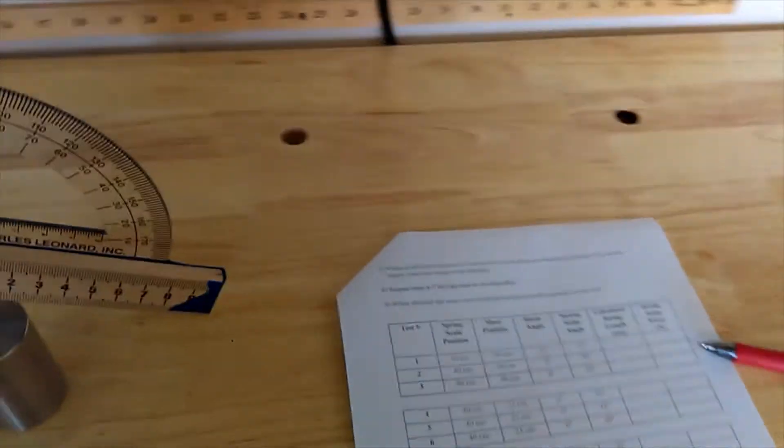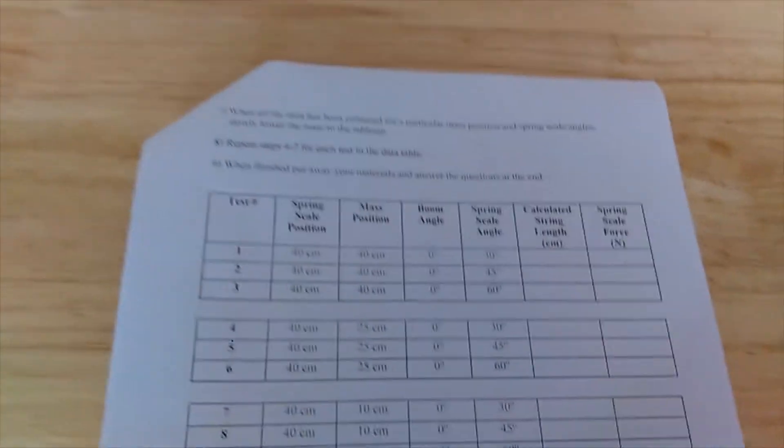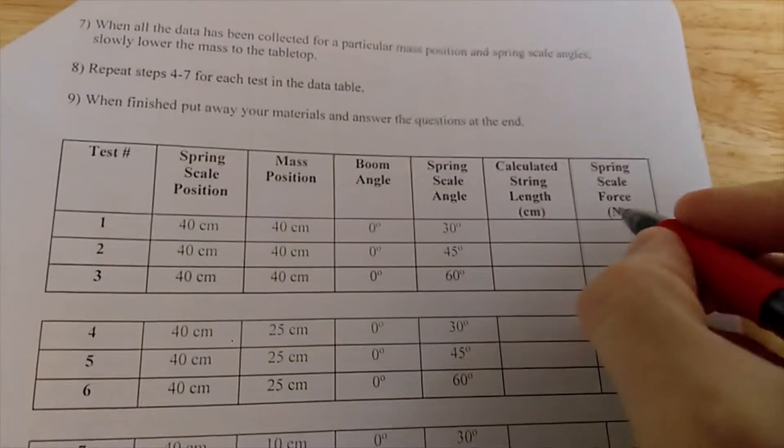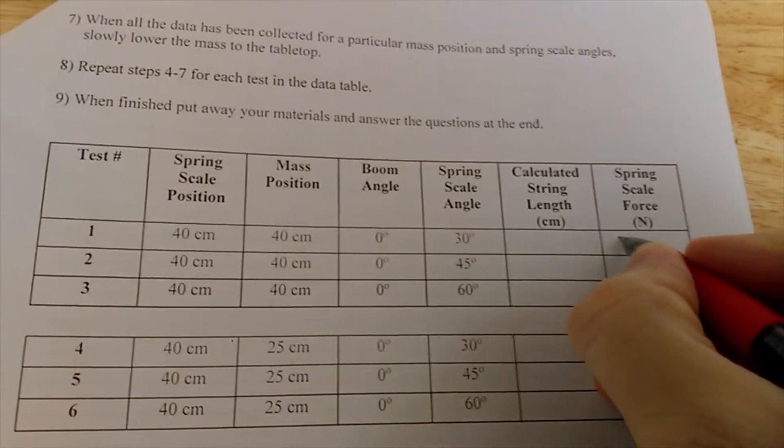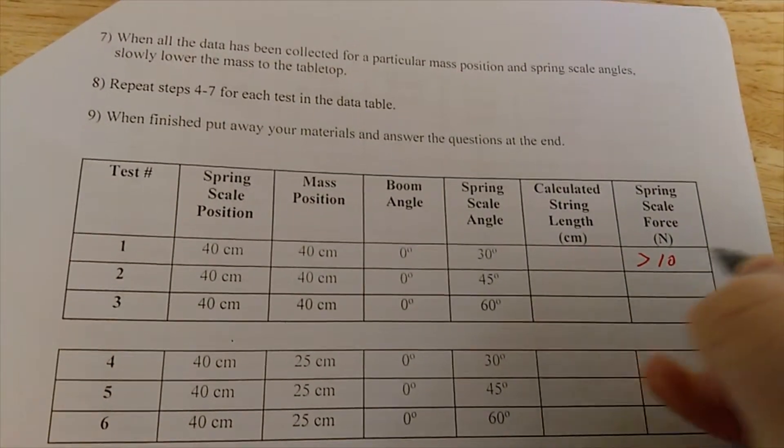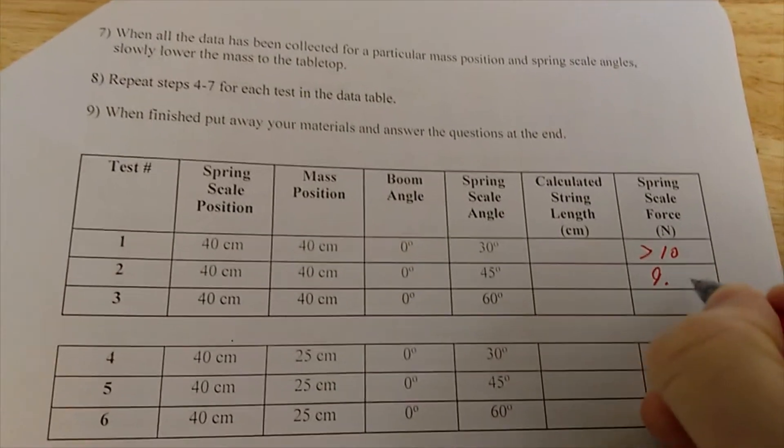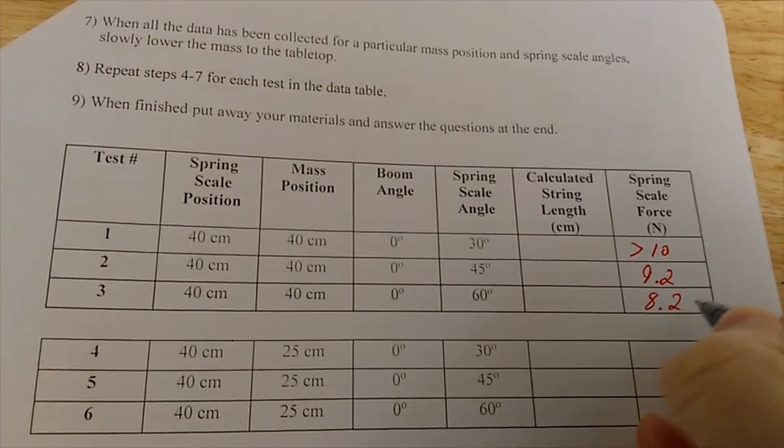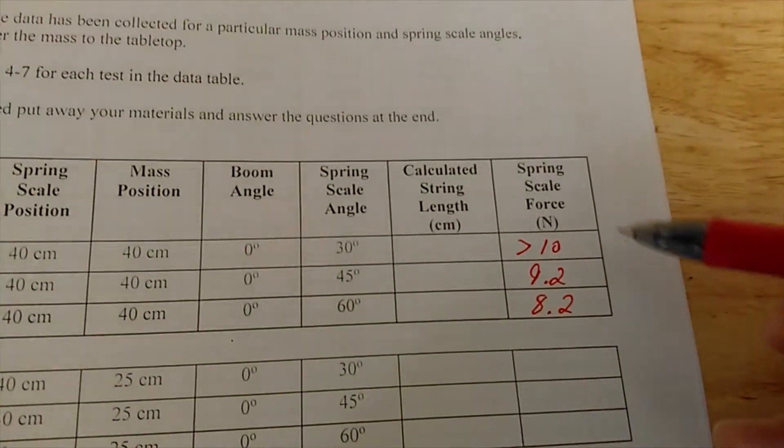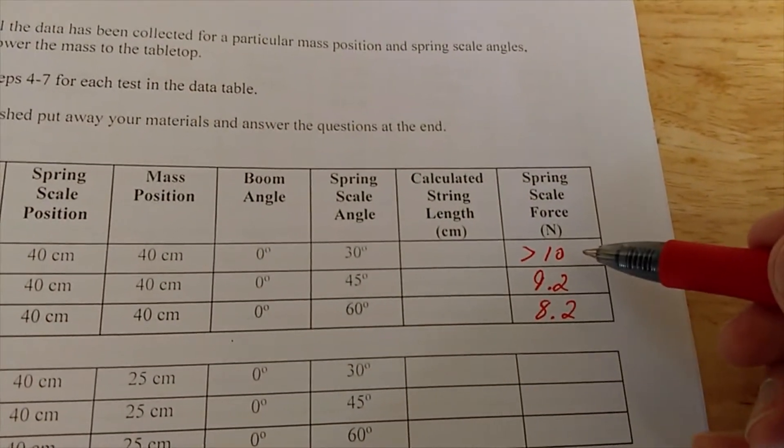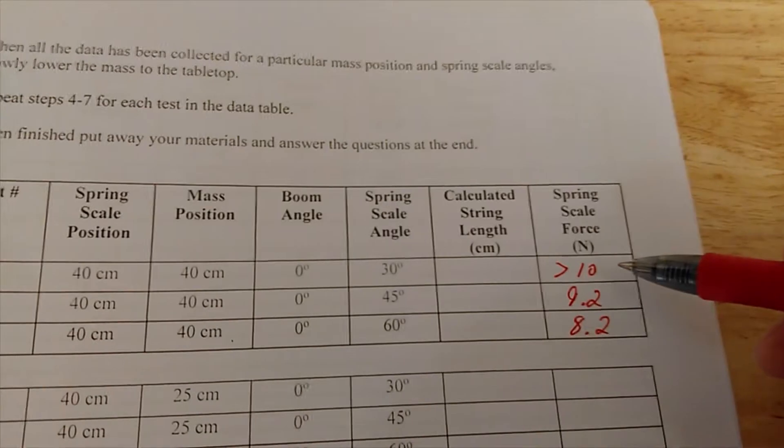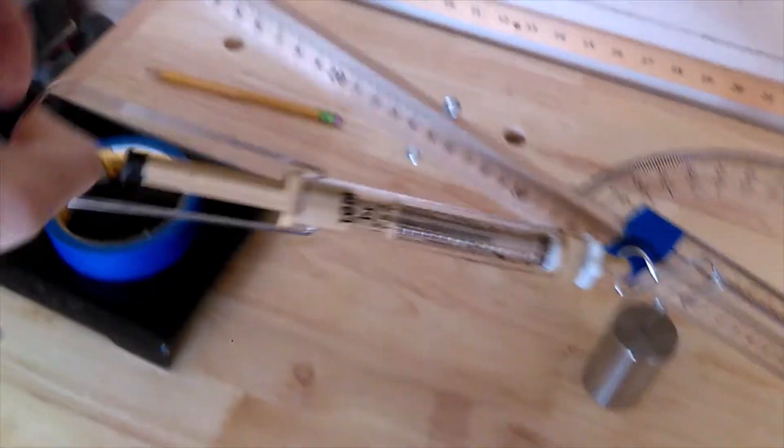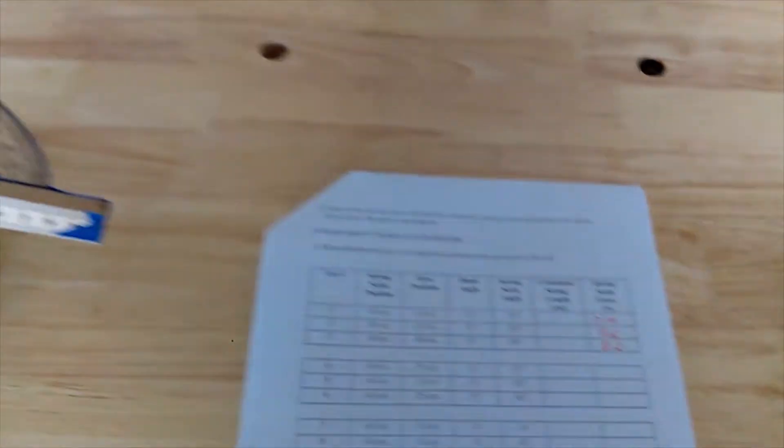So just in recording these, most of them I'm just going to call them out. Let you record them but just on this first one, just so you know what I meant here: greater than 10 newtons, 9.2 newtons, 8.2 newtons for those first three. You're going to have several of them like this that are just greater than 10. And that's fine. That all goes back to the objectives. Our spring scale just maxes out at 10 newtons.